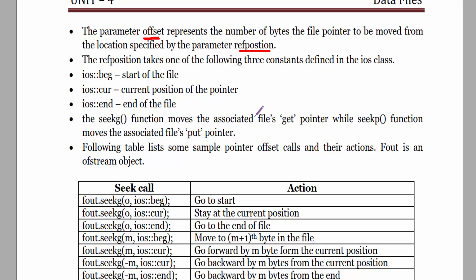seekg moves the associated file's get pointer, while seekp moves the associated file's put pointer. So 'g' is used for get pointer and 'p' is used for put pointer.